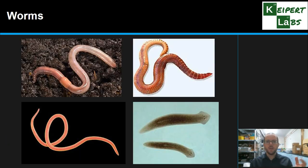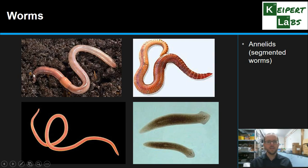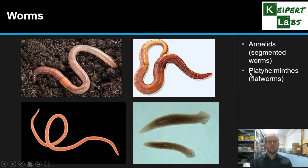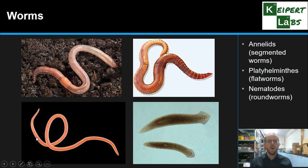Now we're going to look at worms — three groups clustered together under that term. First, annelids or segmented worms, like an earthworm, which has different parts to its body with segments. Then platyhelminths, or flatworms, which have a thin, flat, ribbon-like body instead of a round segmented one. And then nematodes, which are roundworms — they don't have segments, have a round cylindrical body with tapered ends, a mouth at one end and the anus at the other. So annelids, platyhelminths, and nematodes are the three classes of worms among the invertebrates.